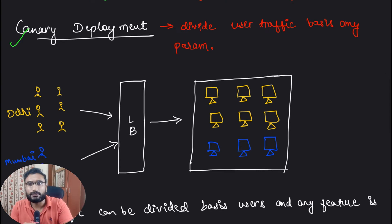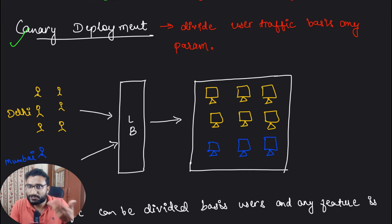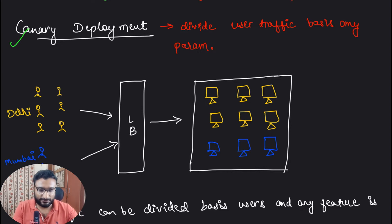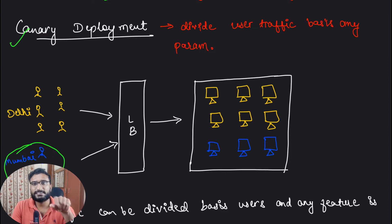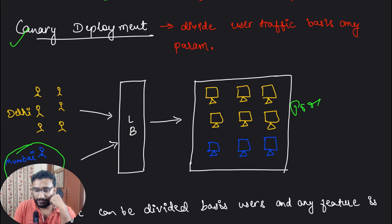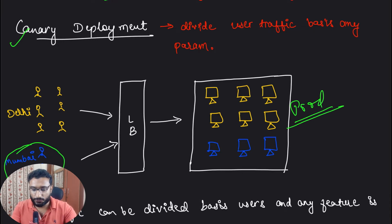We might be launching a new feature or a new system altogether. What you will do first is introduce this system to a very small set of customers. For example, if you're launching in Mumbai, you might launch it in a specific area of Mumbai only. So this is your entire production traffic, and you divide that traffic into two parts — earlier servers and new servers.